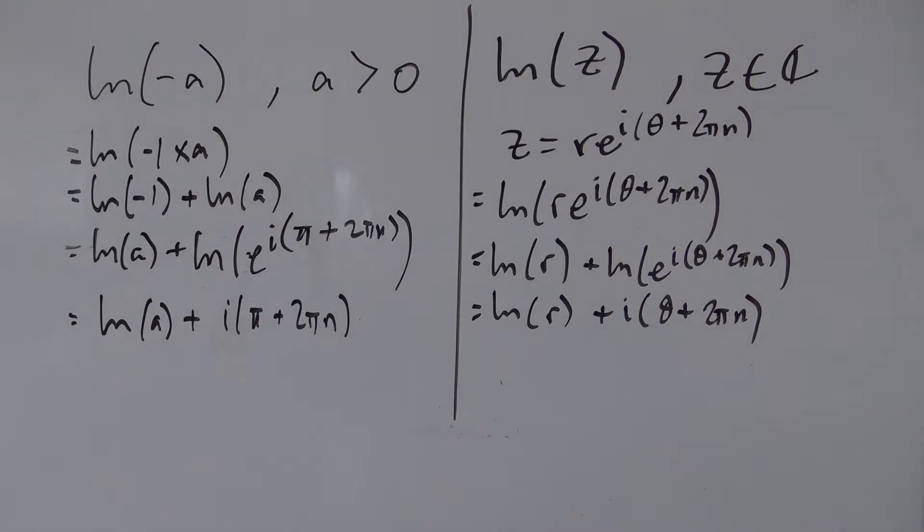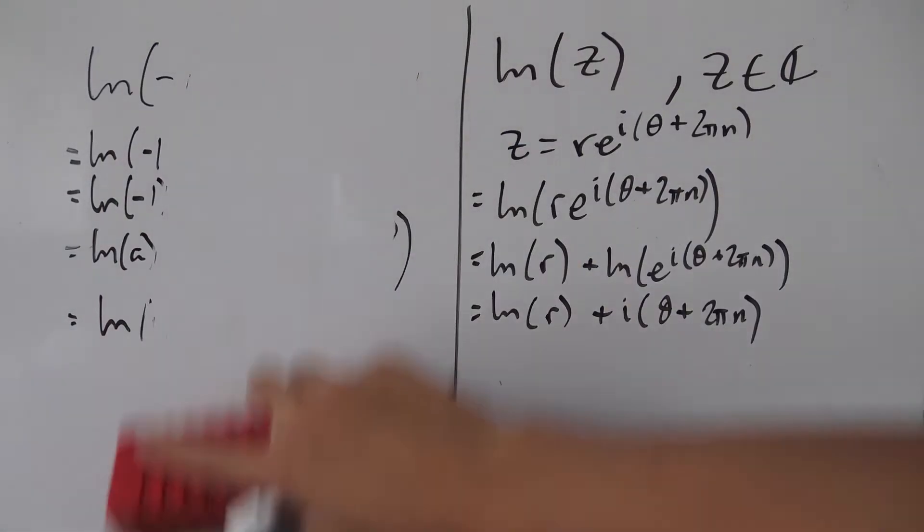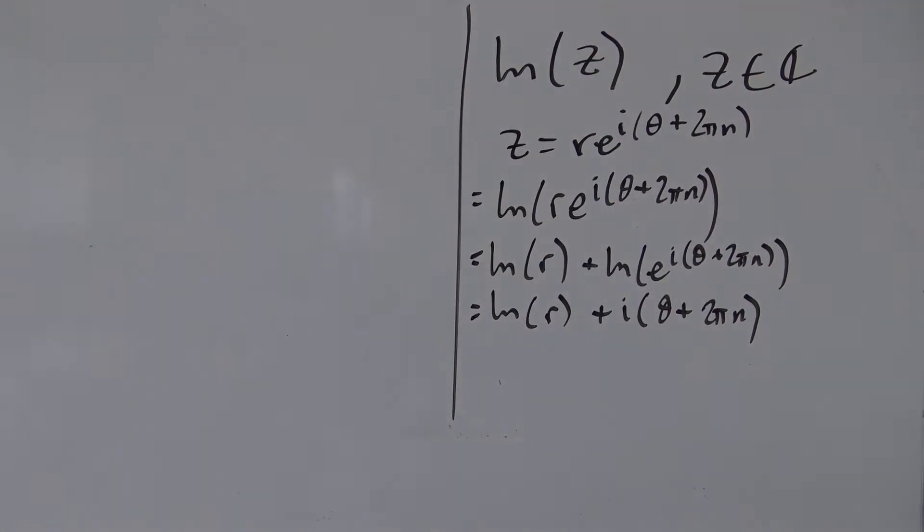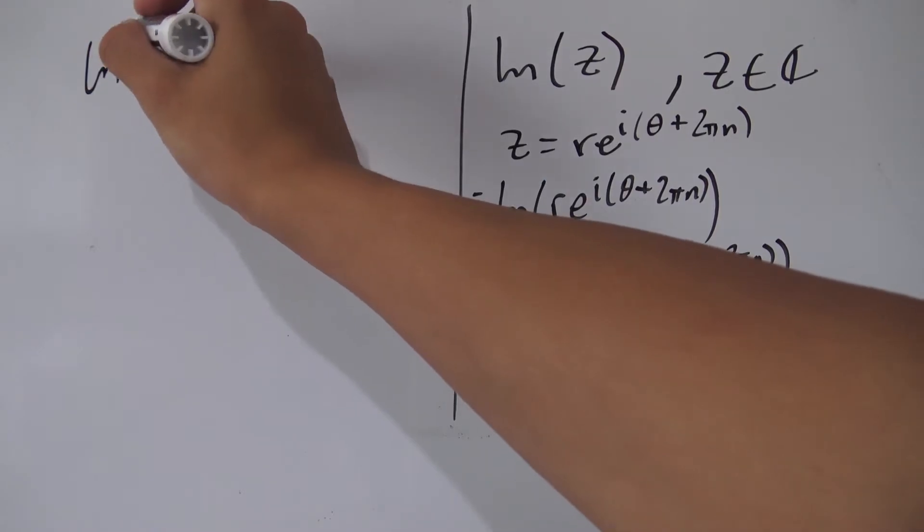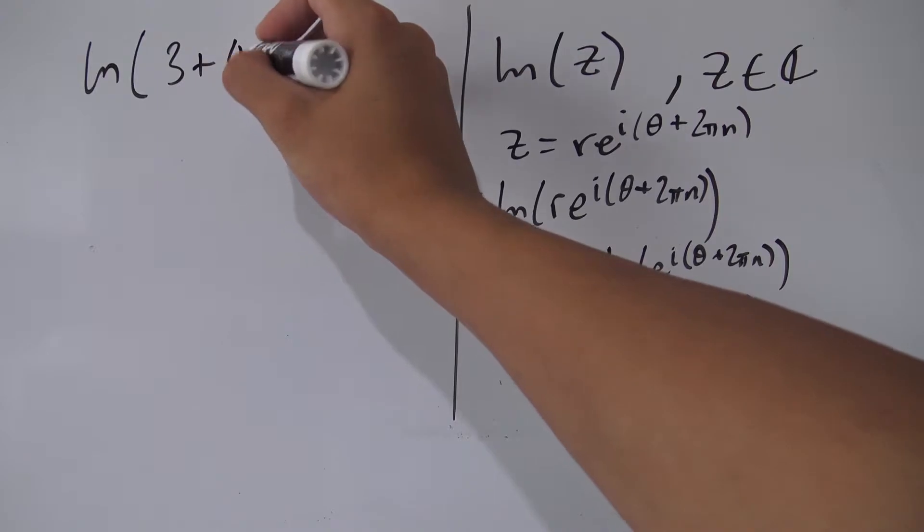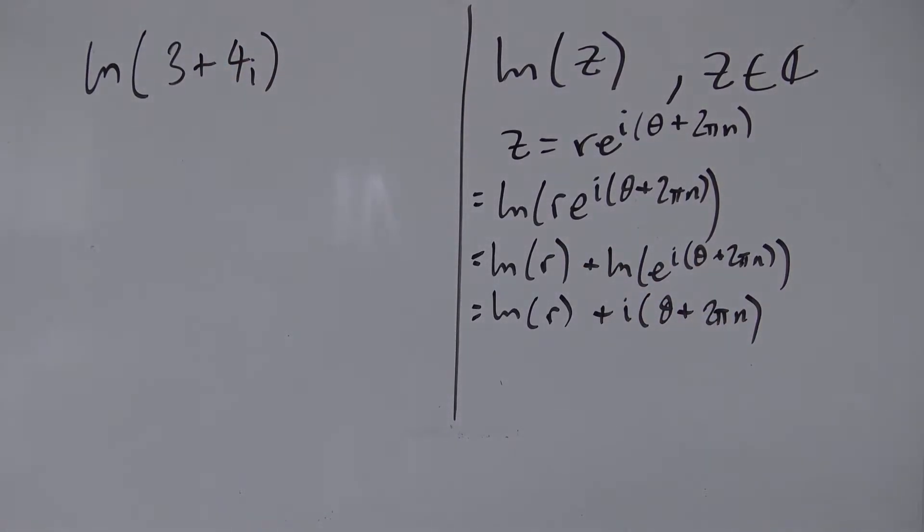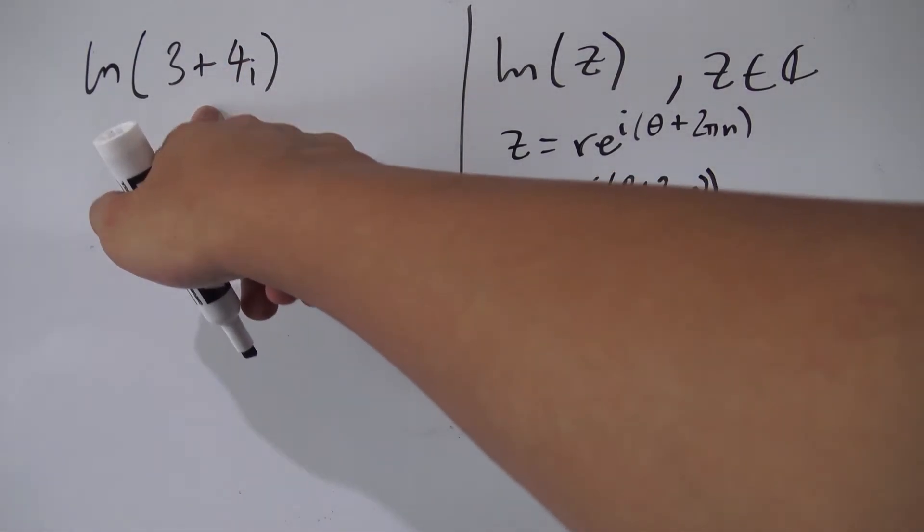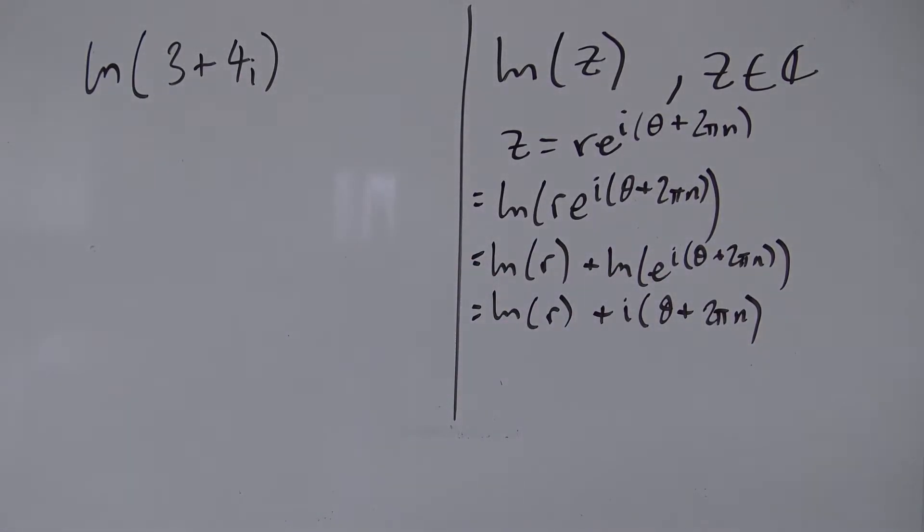So I'm just going to do a quick example just for fun I guess. Let's do natural log of, I don't know, 3 plus 4i. There we go. So first we have to convert this 3 plus 4i into polar form.